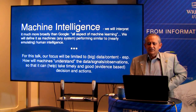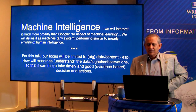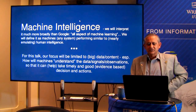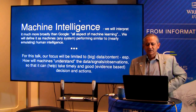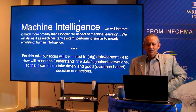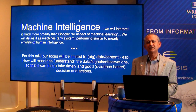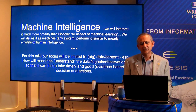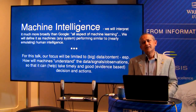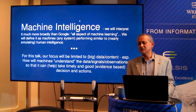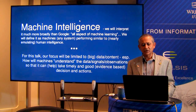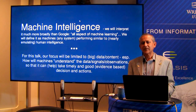Machine intelligence — what does it mean? If you look at Google Research's blogs or descriptions, they talk about it as all aspects of machine learning. But I'll define it a little differently: machines or computer algorithms performing something similar to, nearly, or emulating human intelligence, expressed through human activities and human decision making.